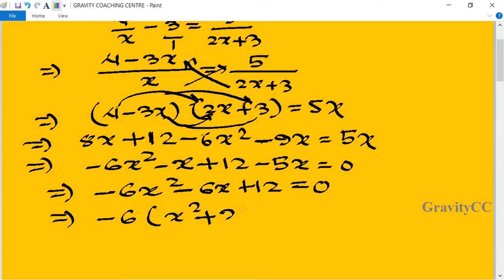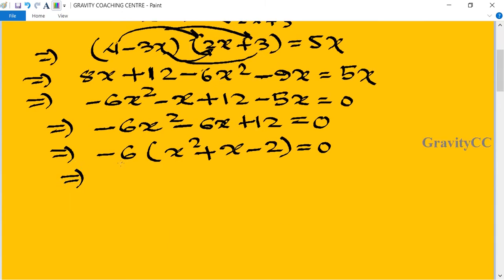Now we take common factor -6: -6(x² + x - 2) = 0. Dividing both sides by -6, we get x² + x - 2 = 0.